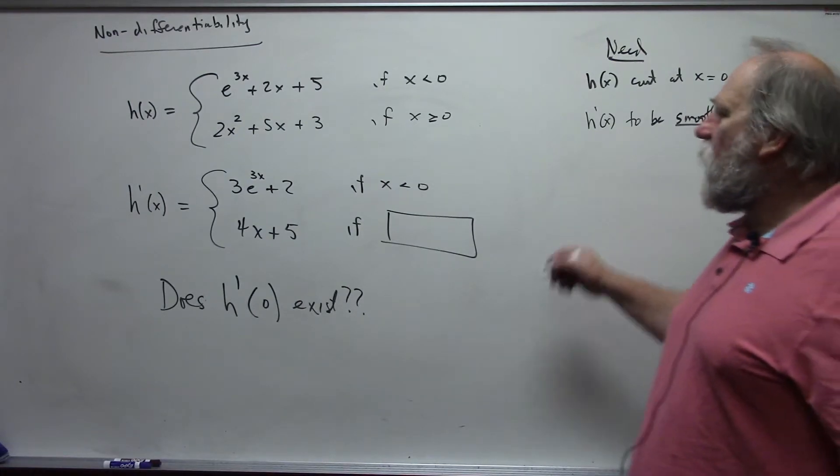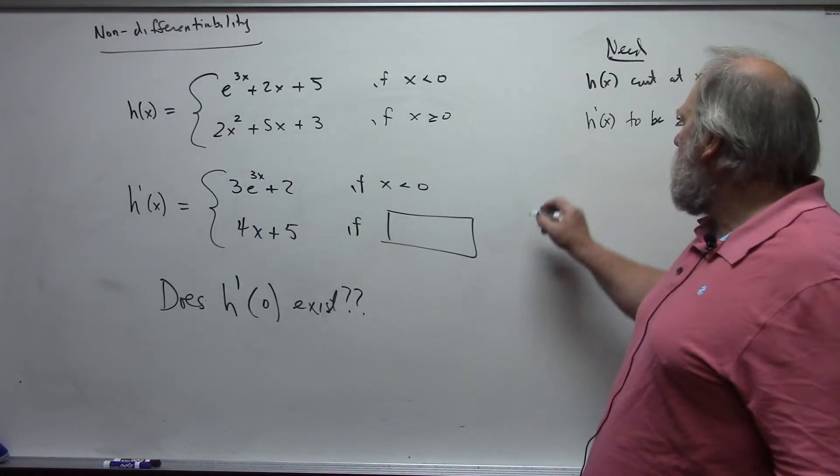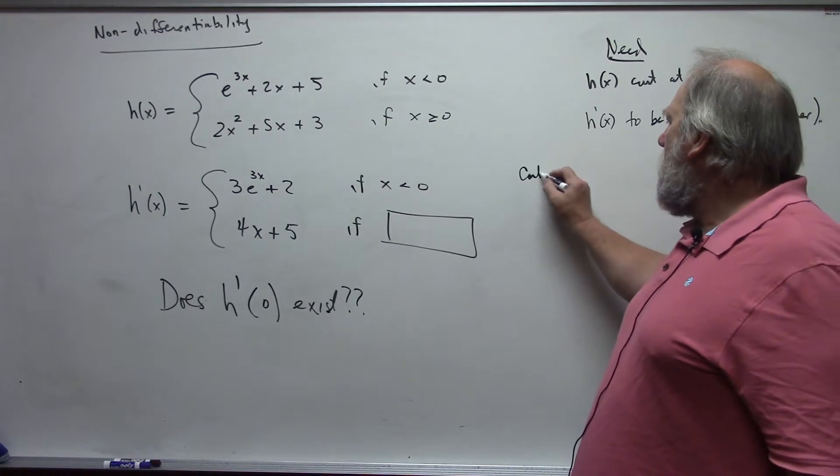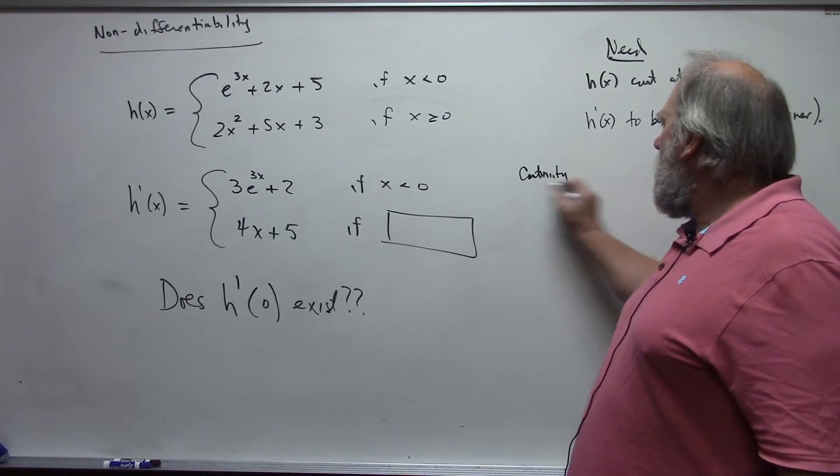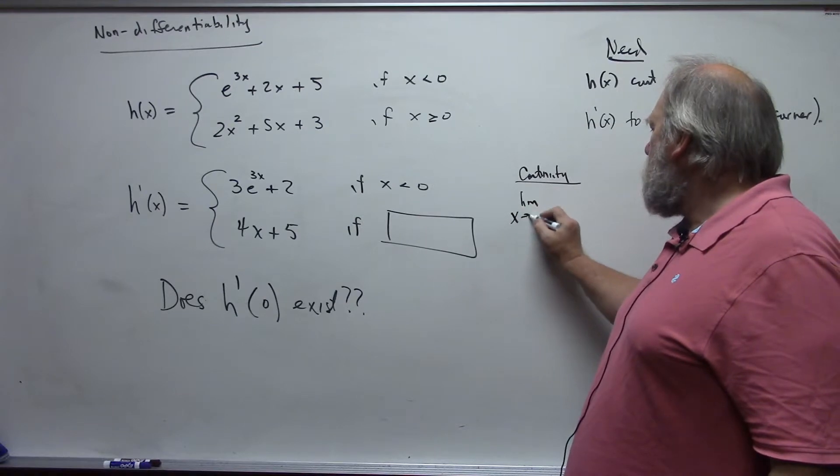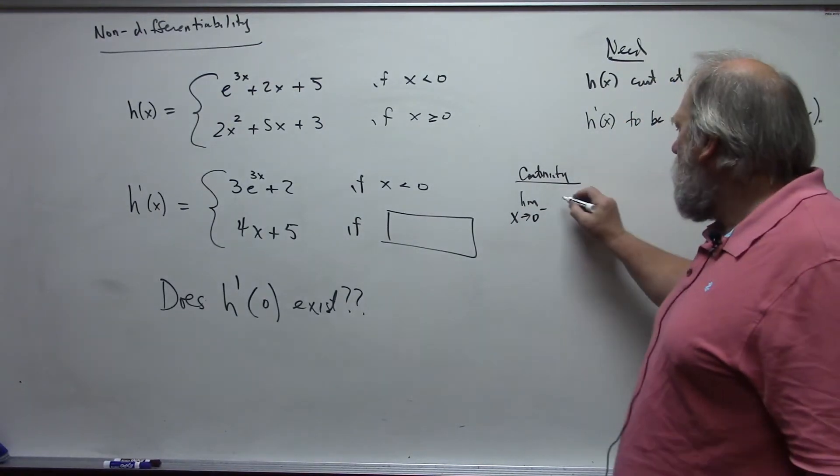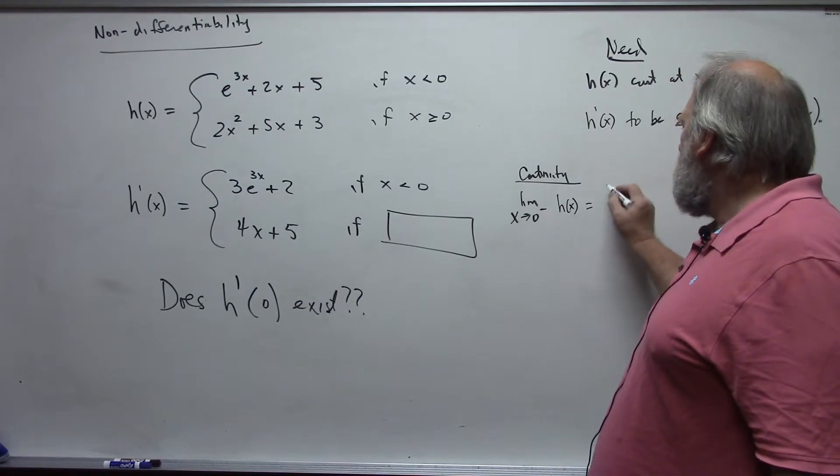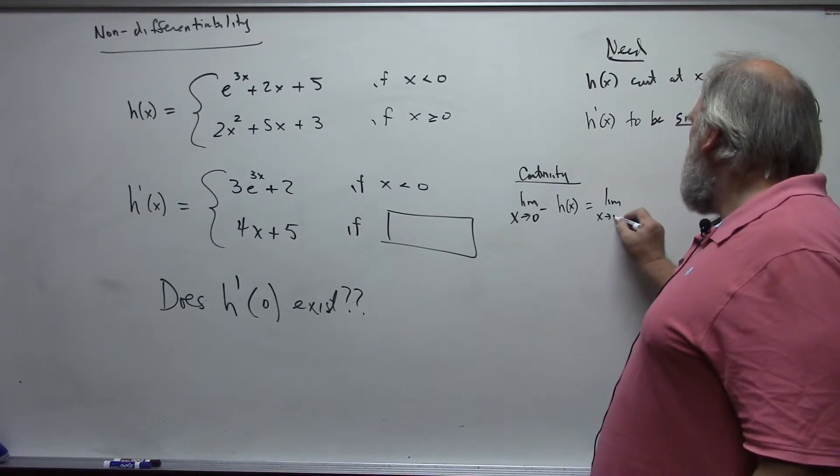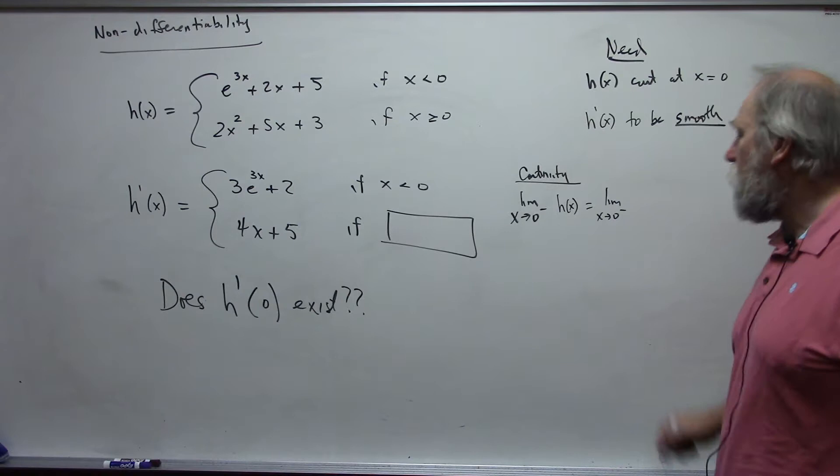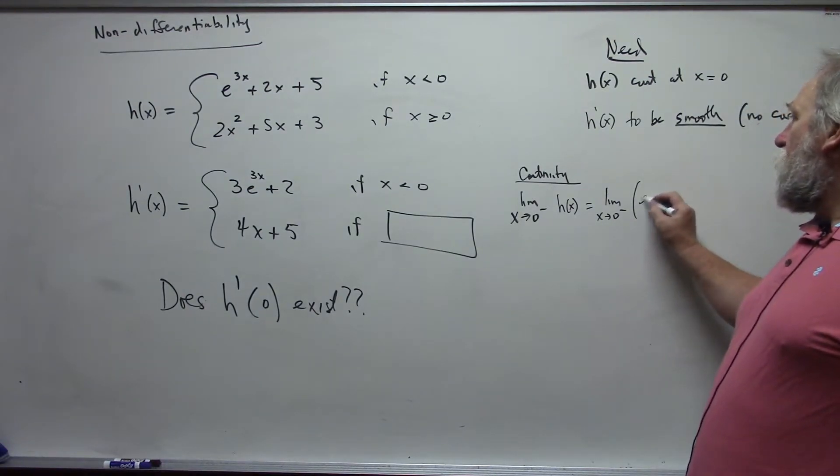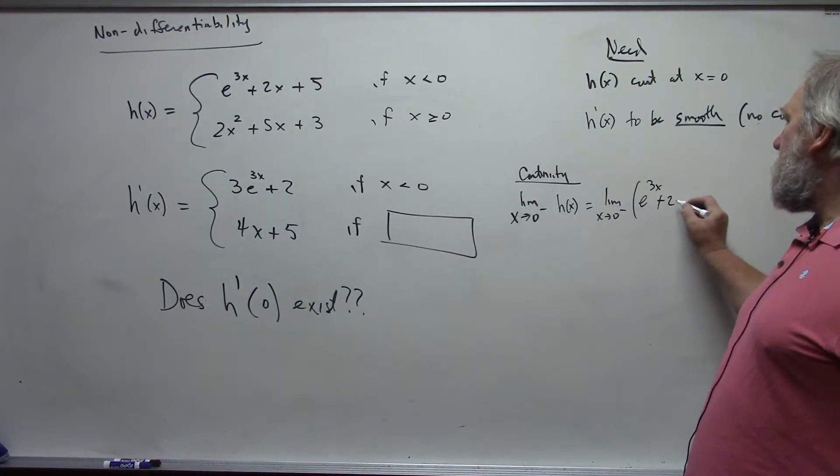Continuity. So for continuity, we have to go back to what we talked about previously. For continuity, the limit as x approaches 0 from the left of h of x would equal the limit as x approaches 0 from the right.